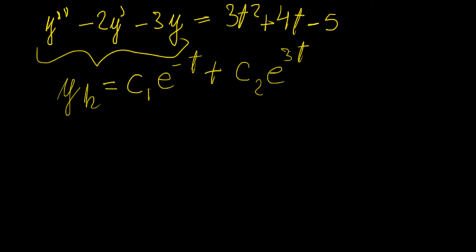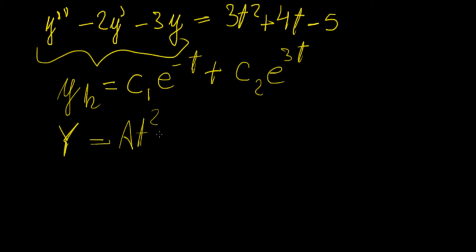Now we need to find out what the other part of the solution is. So we're going to set a function capital Y equal to something similar to this, but instead of having the constants in there we're going to replace them by undetermined coefficients. So we're going to have at squared plus bt plus c.